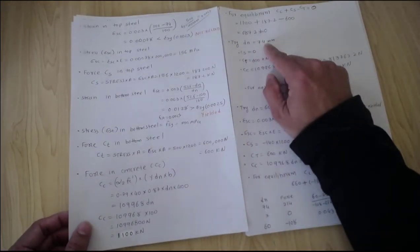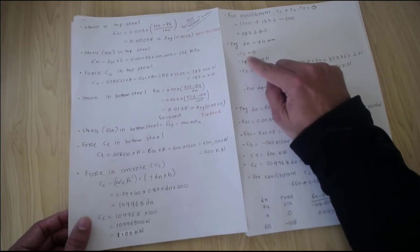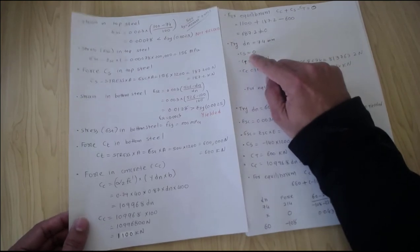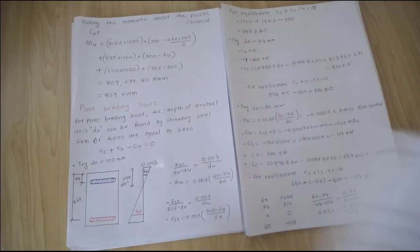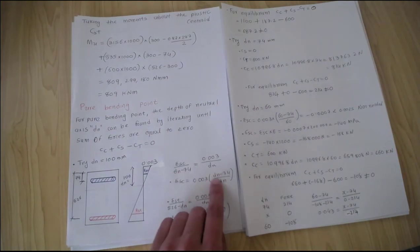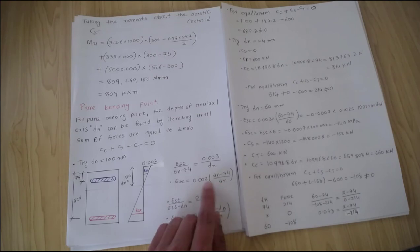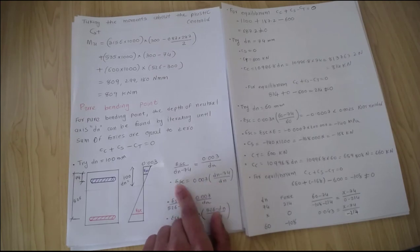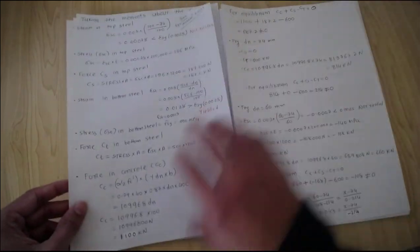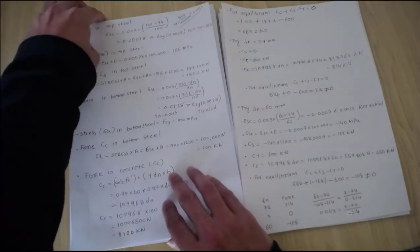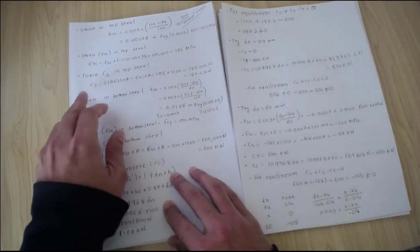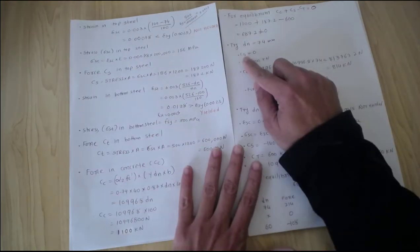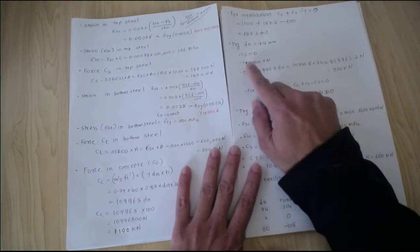So dn equal to 74. In that case, compression force in the steel equals 0, because if you substitute dn equal to 74, you get 74 take away 74 equals 0. So the strain value is 0. If your strain value is 0 in the top steel, then the stress equals 0 and force equals 0. So the force in the top steel is equal to 0.